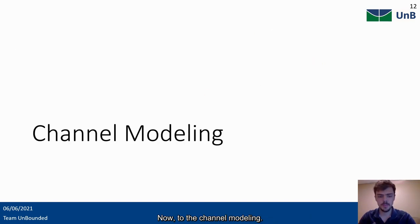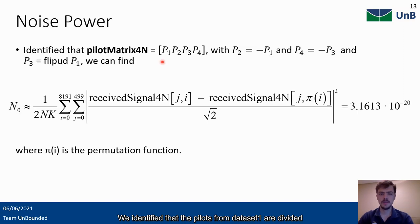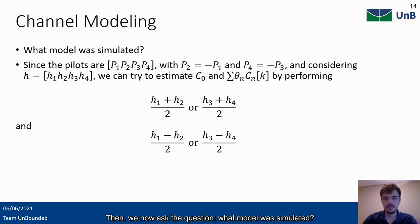Now to the channel modeling. We identified that the pilots from dataset 1 are divided in four blocks: P1, P2, P3 and P4. We noted that P3 and P4 is just a permutation of P1 and P2, which allows us to estimate the noise power in zero with the following formula. Then, we now ask the question, what model was simulated? We can estimate C0 by exploiting the pilot structure of dataset 1. When we sum the samples relative to block 1 and block 2, we would get only the constant C0, since the thetas have alternate sign.